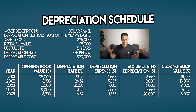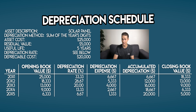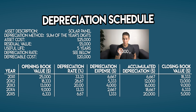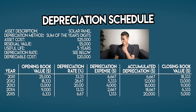Here's the completed depreciation schedule for the whole of your solar panel's useful life. Your asset cost at the start is $25,000 and we've written off a depreciation expense to your income statement each year. After five years, the closing book value has decreased to $5,000 — exactly the same as the residual value we picked at the start. That's a handy check to make sure we've done things right.